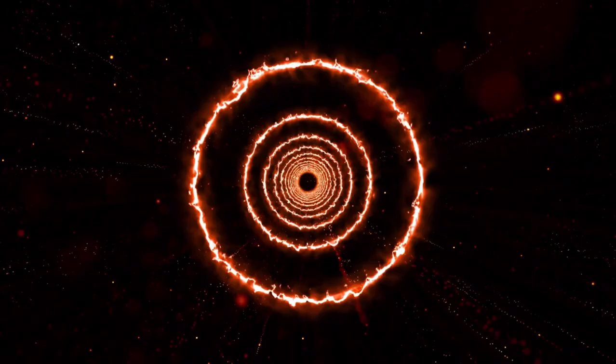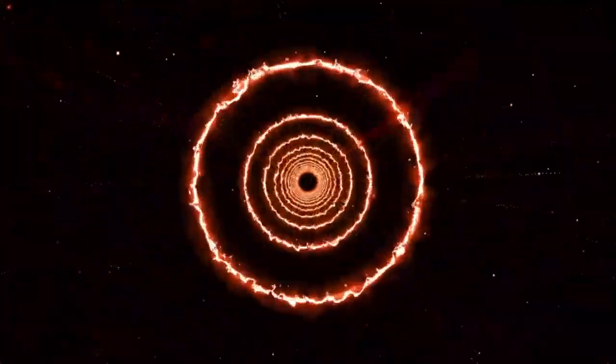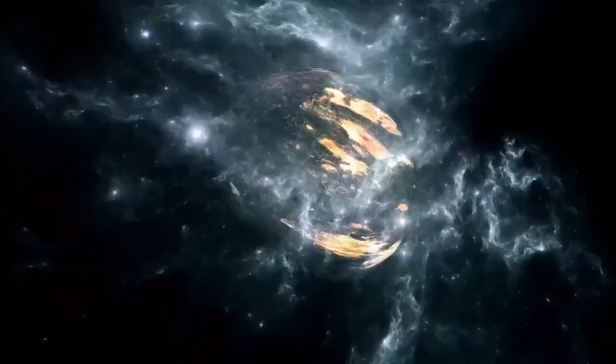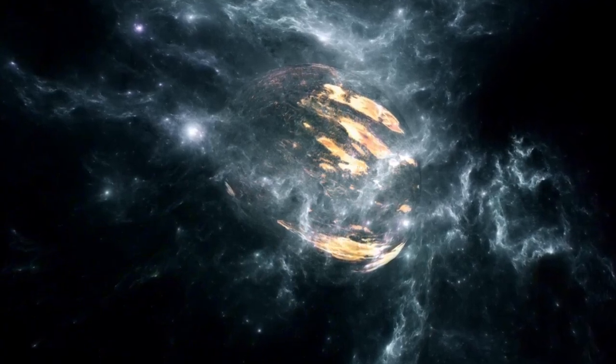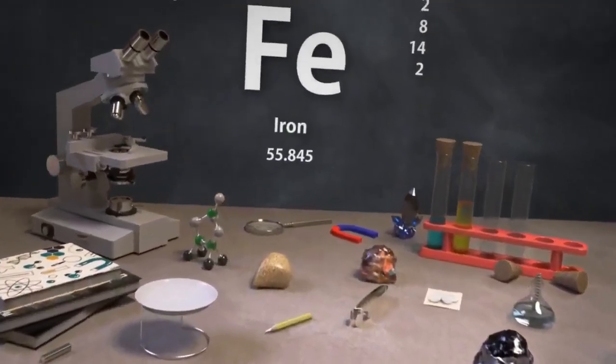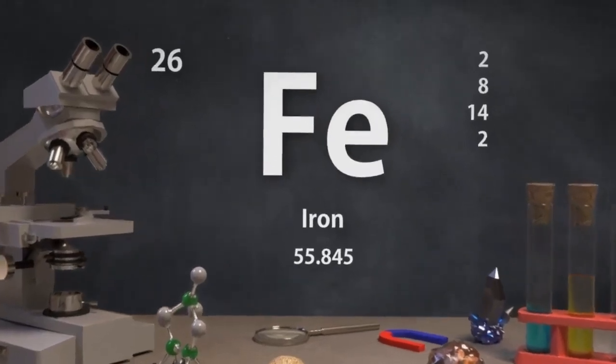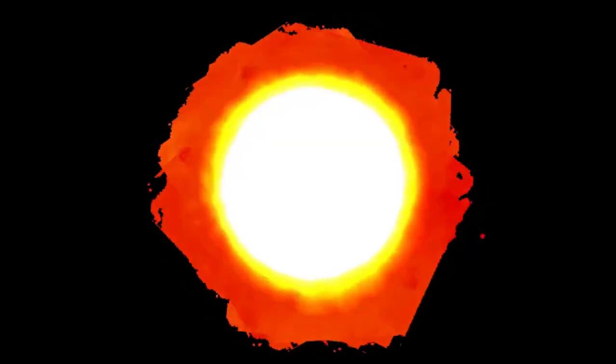A massive star starts its life as a main sequence star, where nuclear fusion in its core turns hydrogen into helium, giving the star energy to resist collapsing under gravity. As the core runs out of hydrogen, it squeezes and heats up, causing helium to fuse into heavier elements like carbon, oxygen, and more. This process keeps going until iron forms in the core.